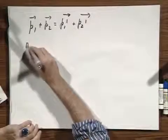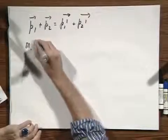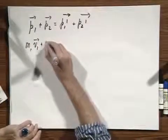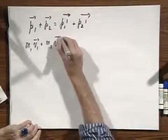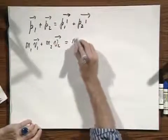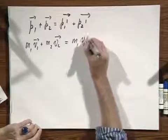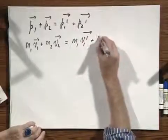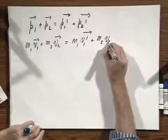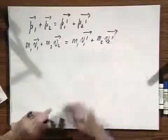And you can write this down as m1 v1, which is a vector, plus m2 v2 vector equals m1 v1 prime, which is a vector, plus m2 v2 prime, which is a vector.